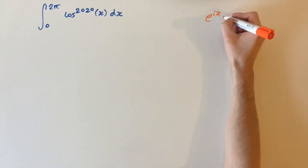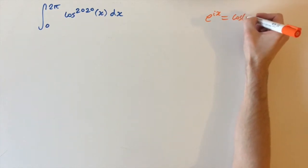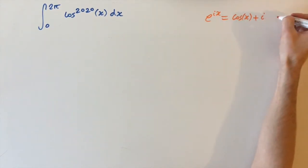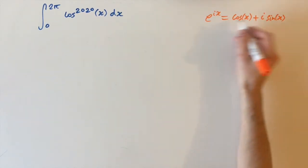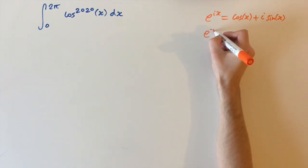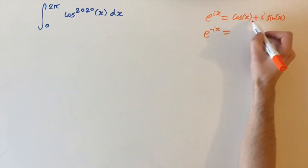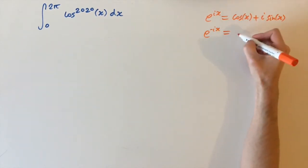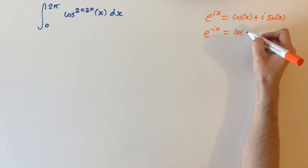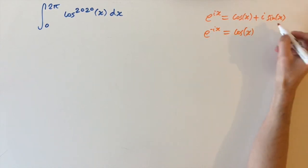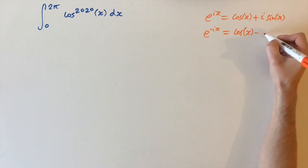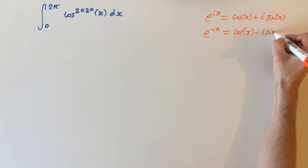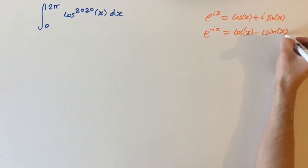If you remember, e to the power of ix we can express as cosine of x plus i — the imaginary constant — times sine of x. We have an analogous formula for e to the minus ix: since cosine is an even function this stays cosine of x, and since sine of x is an odd function we get minus i sine of x.